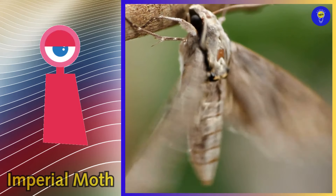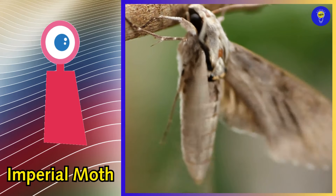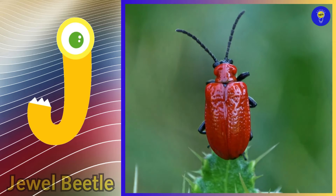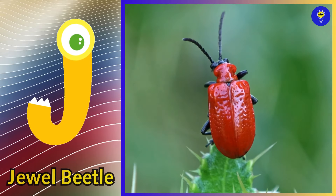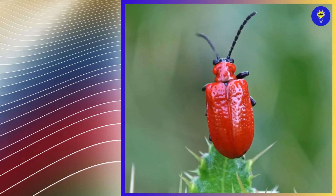I is for Imperial Moth, i, i, Imperial Moth. J is for jewel beetle, j, j, jewel beetle.